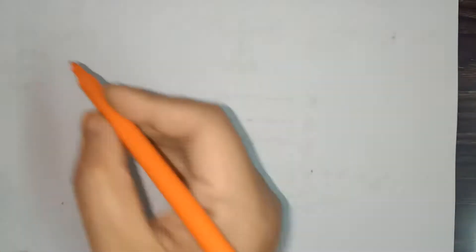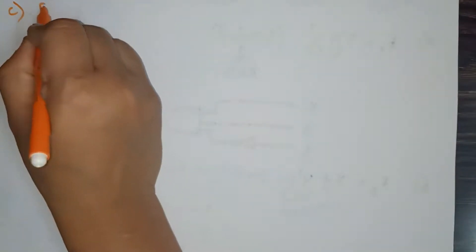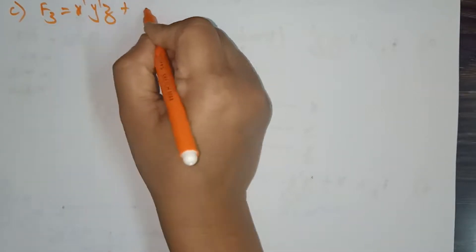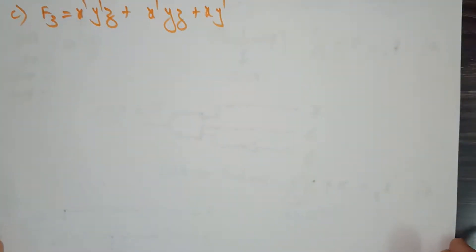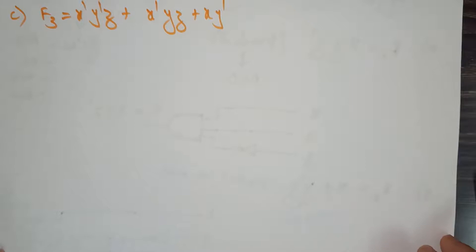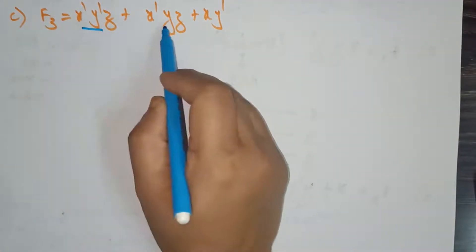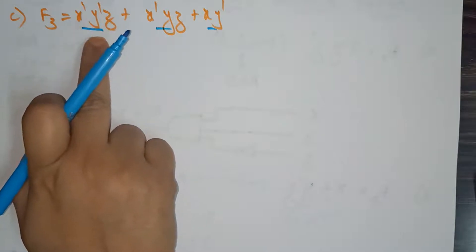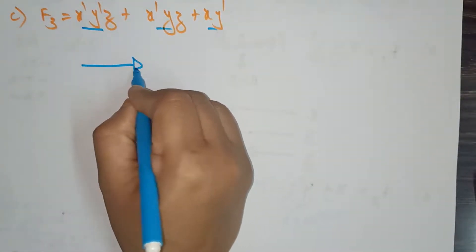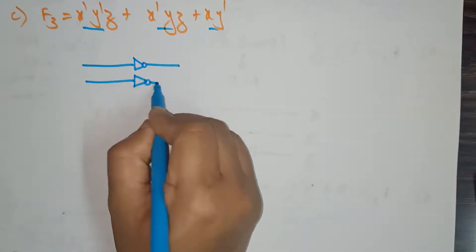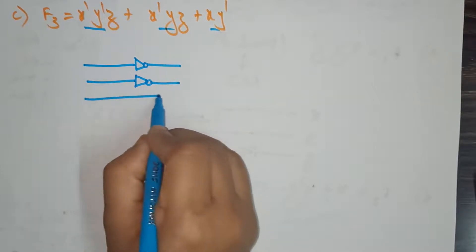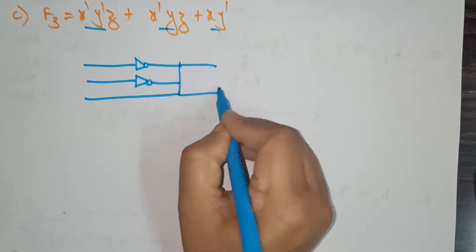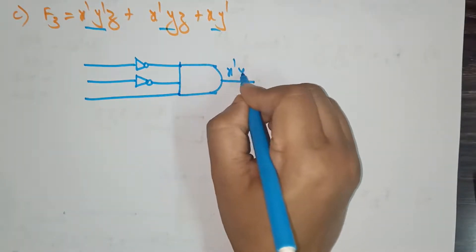Let's take one more example. F3 = x'y'z + x'yz + xy'. The first thing is to observe how many gates are needed. Here I am using three products, meaning three AND gates. First, construct with x'y'z: inputs are x', y', and z, and these are connected to one AND gate with output x'y'z.